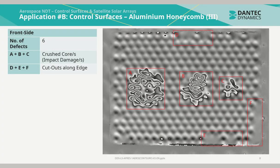This measurement indicated six discontinuities. A, B and C were all indications of crushed cores specifically through impact damage. Discontinuities D, E and F were cutouts along the edge.